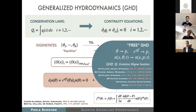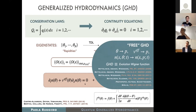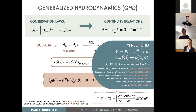Instead of going to the details of this equation, I prefer to give a more intuitive picture. For free models, this equation becomes very easy to understand: when we talk about free models, these rapidities are nothing but the momenta of the particles themselves. And this occupation function becomes the occupation function in phase space, also known as the Wigner function. Therefore, in this case, the equation of GHD is nothing but the evolution equation of the Wigner function, which is something routinely used in semi-classical methods since a long time.